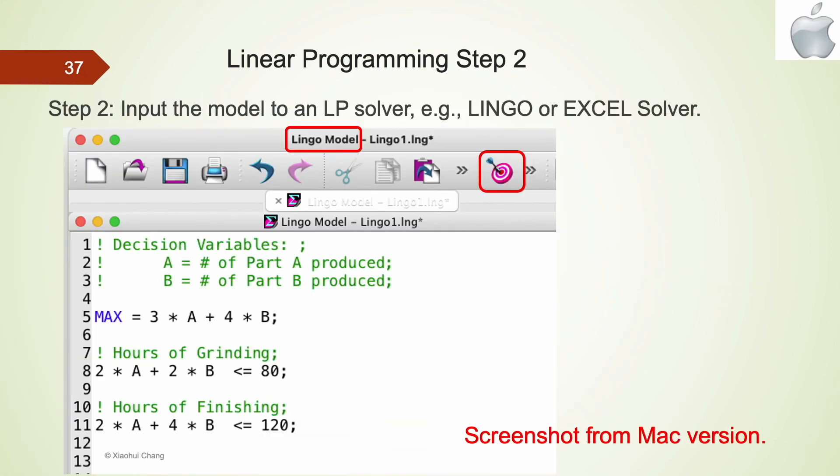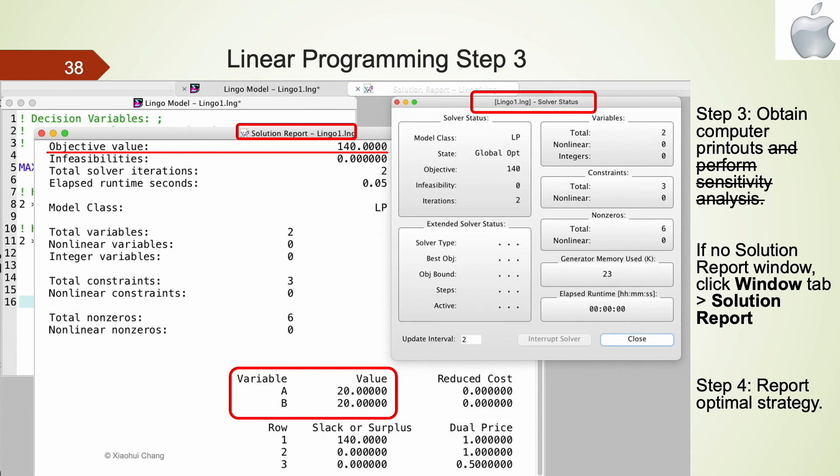Here is the screenshot from Mac version of Lingo. The interface looks slightly different but it contains all the essential icons, so this is the target icon which is also known as the solver. The optimal solutions and strategies are identical. This company should produce 20 units of A and 20 units of B to obtain the highest weekly profit of 140 dollars.